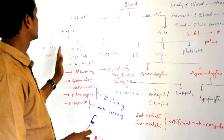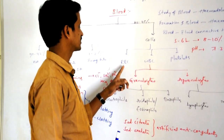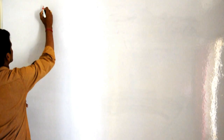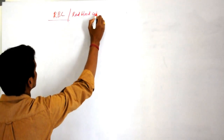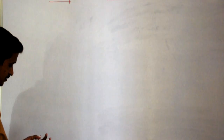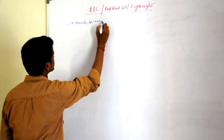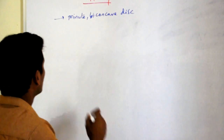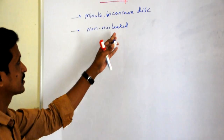We have finished the complete composition of plasma. Now let us study blood cells, starting with red blood cells, also called erythrocytes. Red blood cells are minute biconcave disc-like structures with thick and rounded periphery. They are non-nucleated — the nucleus is absent in the case of erythrocytes.